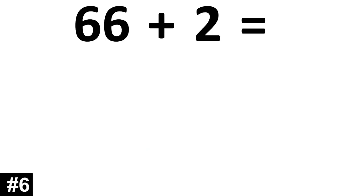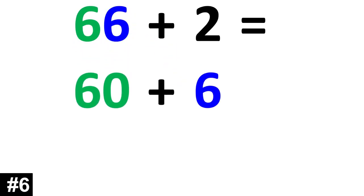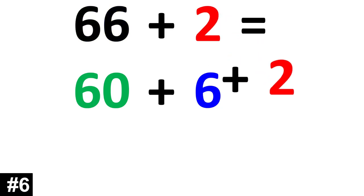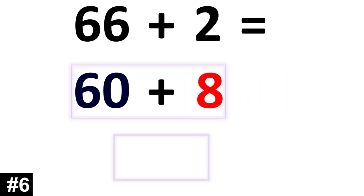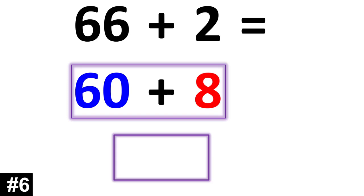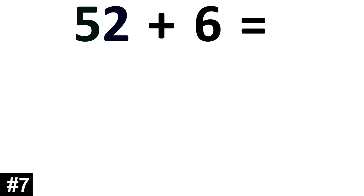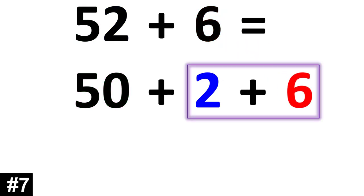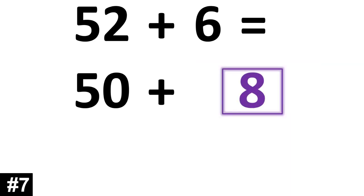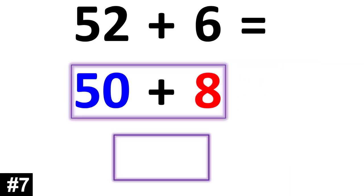How about 66 plus 2? 66 is the same thing as 60 plus 6. We add the 2 and we have 6 plus 2, which gives us 8. 60 plus 8 is equal to 68. Next, 52 plus 6. 52 is the same thing as 50 plus 2. If we add the other 6, 2 plus 6 is going to be equal to 8. We add that to the 50 and we have 58.